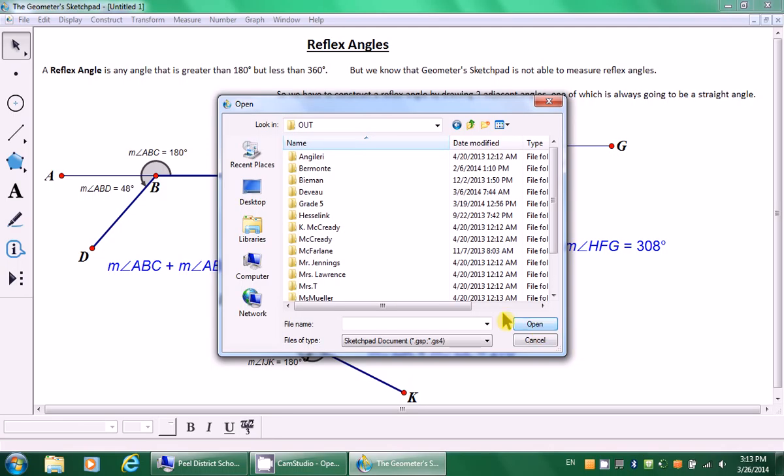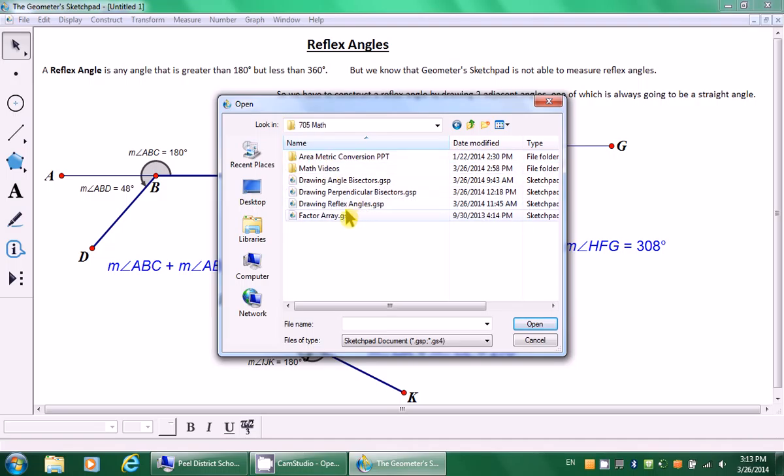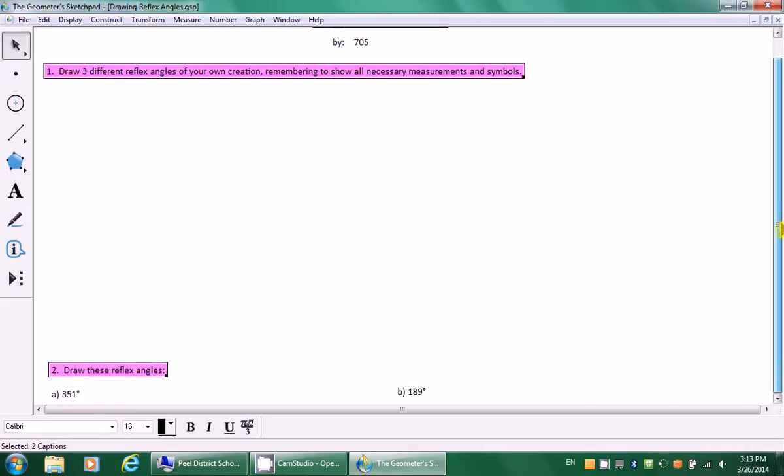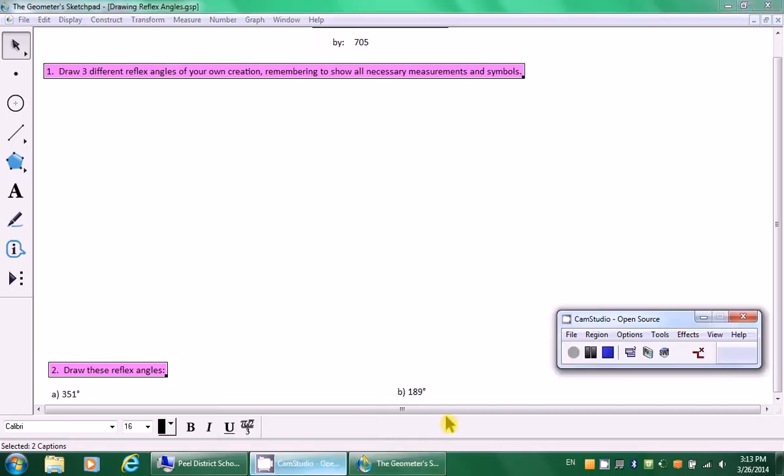So now that you've completed the lesson, I want you to go to file open, go down to four students, double click out. Go down and find my name, double click Ueda, double click 705 math. And I want you to open drawing reflex angles. And here you have your assignment. Make sure you fill in your name here and you have question one and question two. Call me when you're ready to print. Thanks a lot for listening. Bye bye.